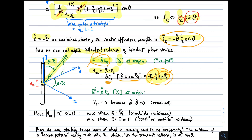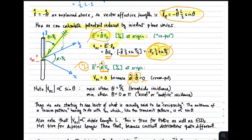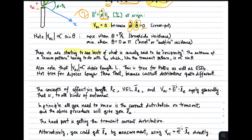Now consider a second case: what happens if instead of being copolarized, the incident electric field is cross-polarized — polarized in the phi-hat direction as opposed to the theta-hat direction? In that case, the open circuit voltage induced will be 0, because the dot product of the polarization of the incident electric field with the polarization of the dipole is 0. This starts to show what is commonly meant by reciprocity in antenna discussions — the existence of a receive pattern, relating to open circuit voltage magnitude and phase, which has the same functional dependence as the transmit pattern, here proportional to sine theta.